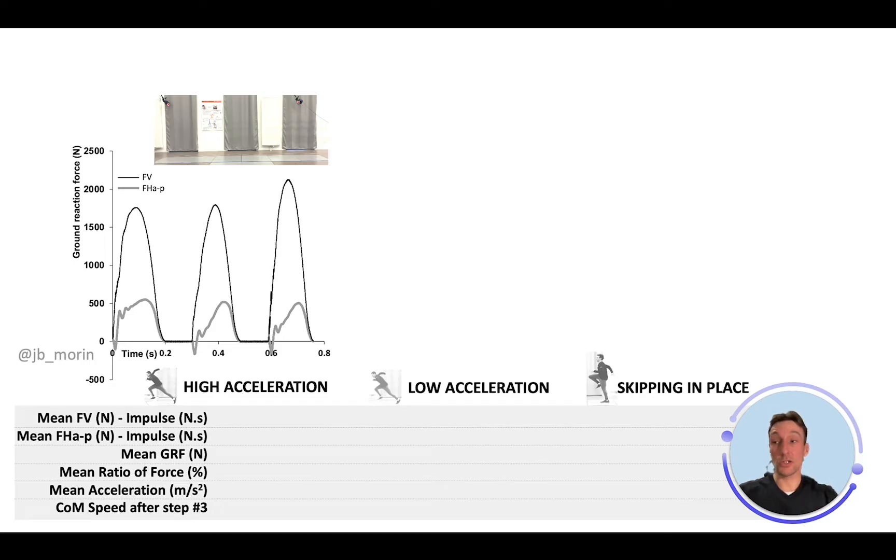The ground reaction force is a single force but can be divided into two components. You see the vertical component, the force directed vertically in black, and the gray component is the horizontal anterior-posterior or AP component, the force directed back and forth.